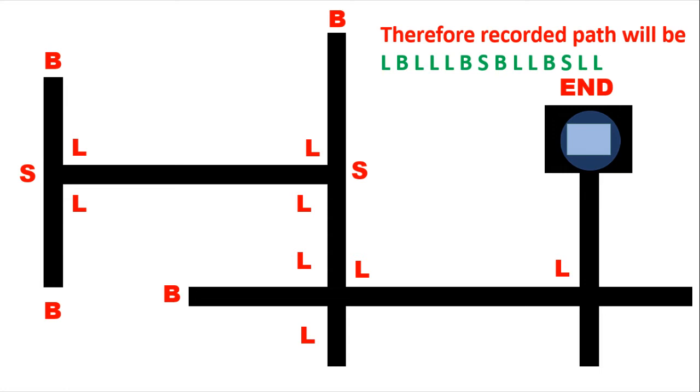Now one thing is very clear in this case: that whenever you encounter a B kind of a pattern, like you have a B here, you have an L and L before and after B. So similarly you have another path called LBS, then you have SBL.